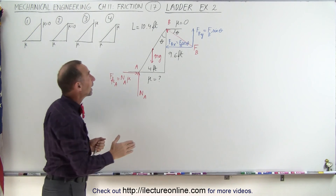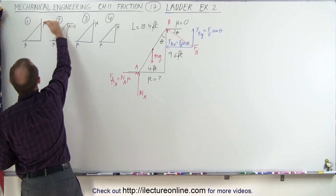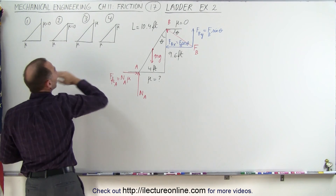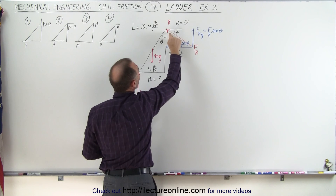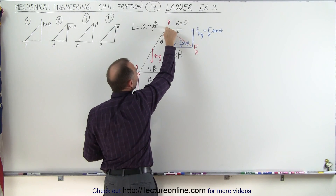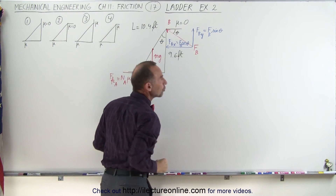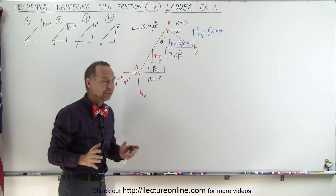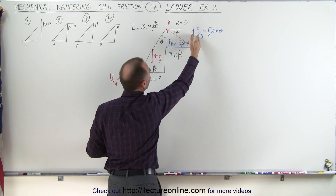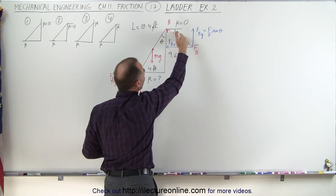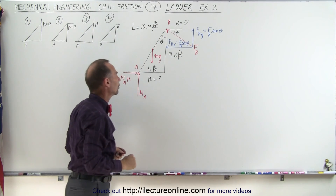Notice that in the previous example, the normal force was perpendicular to the surface, but in this case, the force pushing back against the ladder, since it's acting at a corner, must be perpendicular to the direction of the ladder. This means there's going to be a vertical and a horizontal component to this force pushing back against the ladder leaning against that corner.